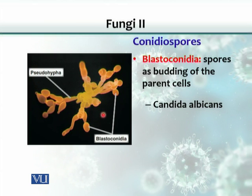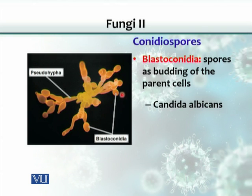Candida albicans is non-filamentous. Although the cells bud off from each other and are arranged one after the other — looking like hyphae or a fragment — they are not true hyphae. That is why the name given to them is pseudo-hyphae: false hyphae. At the end, there is a budding off of the spore, which we call blastoconidia, so Candida albicans is another example of this.